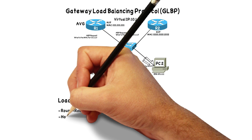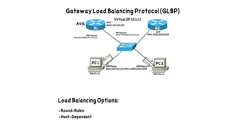Another load balancing option is host-dependent. We're probably not going to use this option much, but if you have a design requirement that a particular PC or host needs to always point to a specific MAC address as its default gateway's MAC address, you can configure that. You can link a specific host to always get the same ARP reply — to always get a reply saying the MAC address for this default gateway is whatever you want it to be. Remember, round-robin is the default.